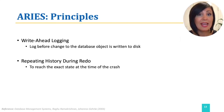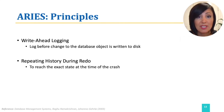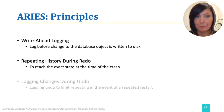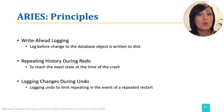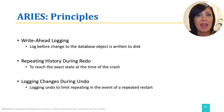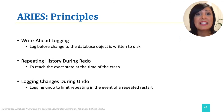Then, ARIES performs the undo phase, removing the effect of the transactions that were still active at the time of the crash and aborted by the crash from the current state. During undoing, ARIES also records logs to ensure we have a record of the accurate current state in the event of repeated crashes. Remember that undo log records were named compensation log records, or CLR records.